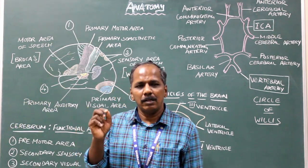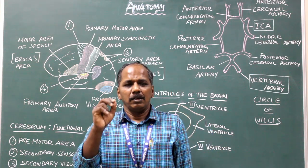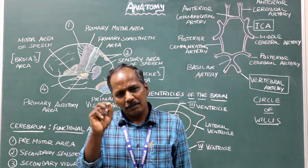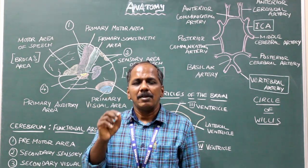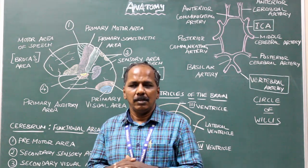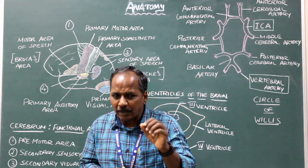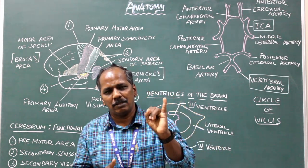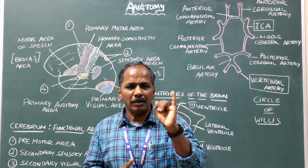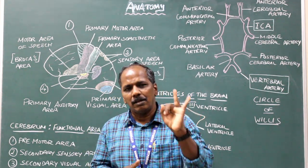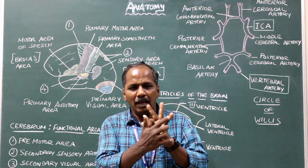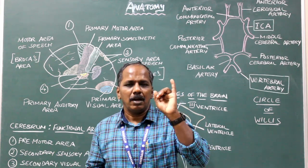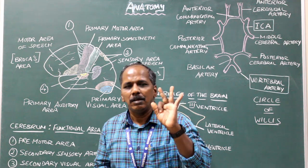White matter of the cerebrum. The white matter of the cerebrum contains myelinated fibers. The fibers of the cerebrum are classified into three types: association fibers, commissural fibers, and projection fibers.